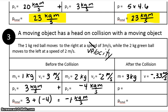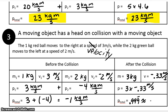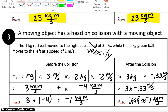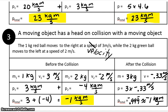After the collision, we have 3 times negative 0.33 meters per second, which technically gives us 0.999 repeating — as close as we're going to get to negative 1 kilogram meter per second. So again, our total momentum before the collision is equal to our total momentum after the collision.